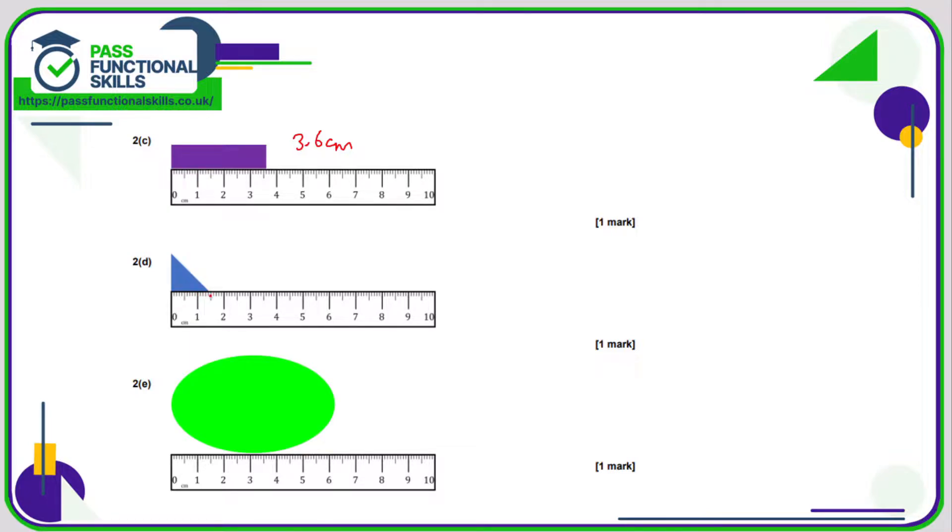Some of these, one or two are quite a tiny bit difficult to read. This one's fairly clear though, that's 0.9 centimeters. This one goes 3.5, just beyond it, so that's 3.6 centimeters. This triangle is not 1.5, so that's 1.4 centimeters.